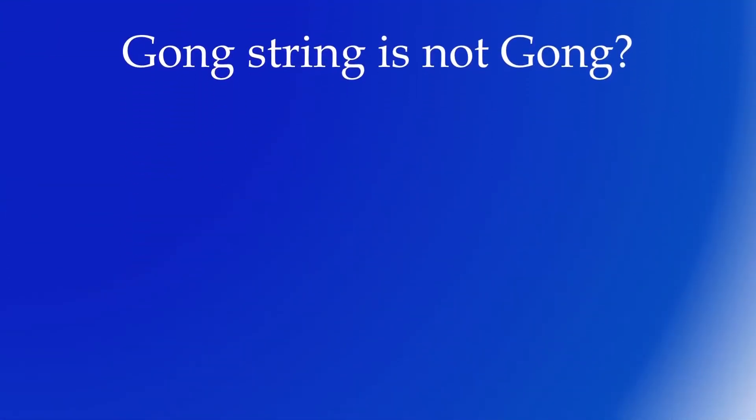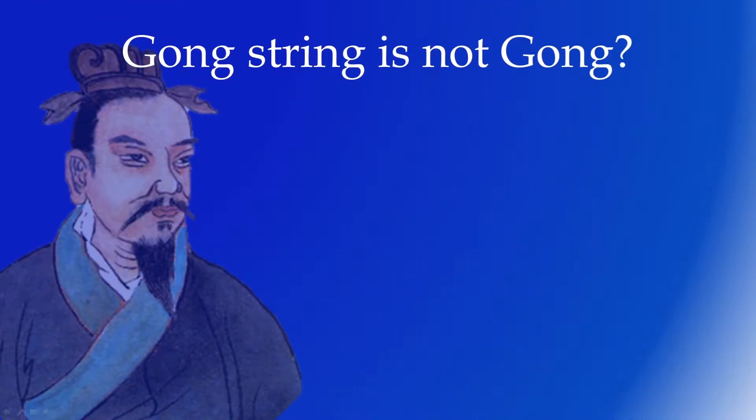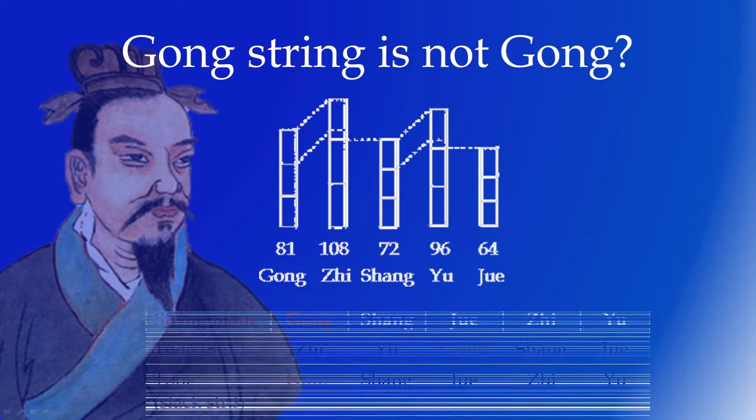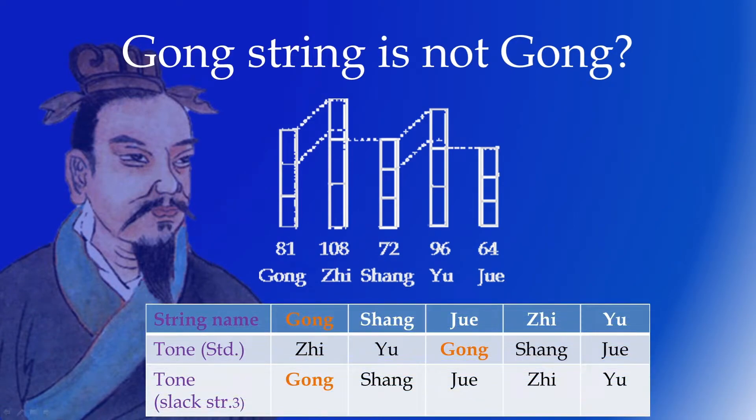If we refer back to Guanzi's diyuan chapter, you'll notice that zhi and yu's numbers are larger than the gong sound, as a result of adding a third to gong and shang's values. If we follow this logic, then the gong sound naturally will be situated on the third string, flanked by zhi and yu on the lower string, and shang and jue higher.